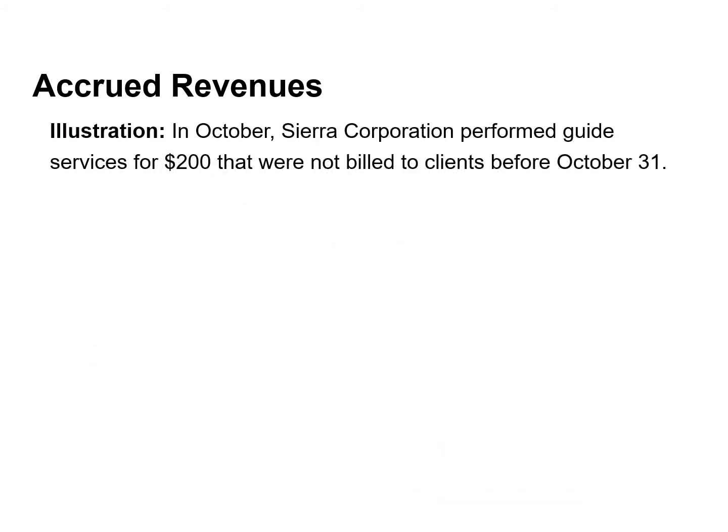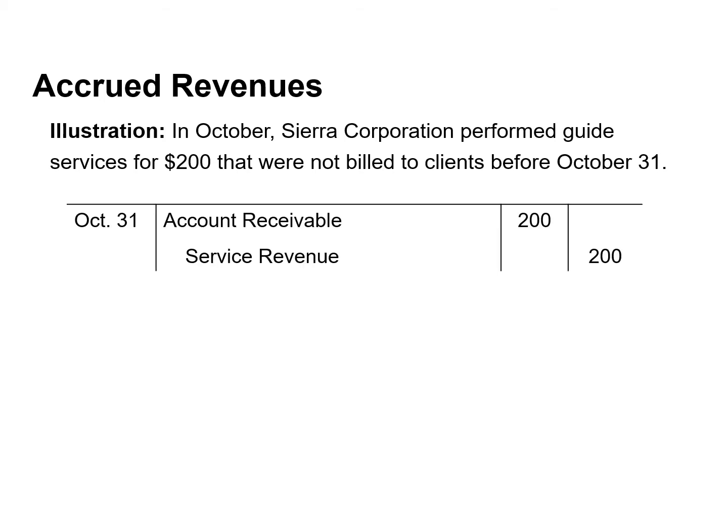In October, Sierra Corporation performed guided services worth $200 that were not billed to clients. Because these services were not billed, they were not recorded. The accrual of this revenue increases an asset account, accounts receivable, and also increases a revenue account, service revenue.